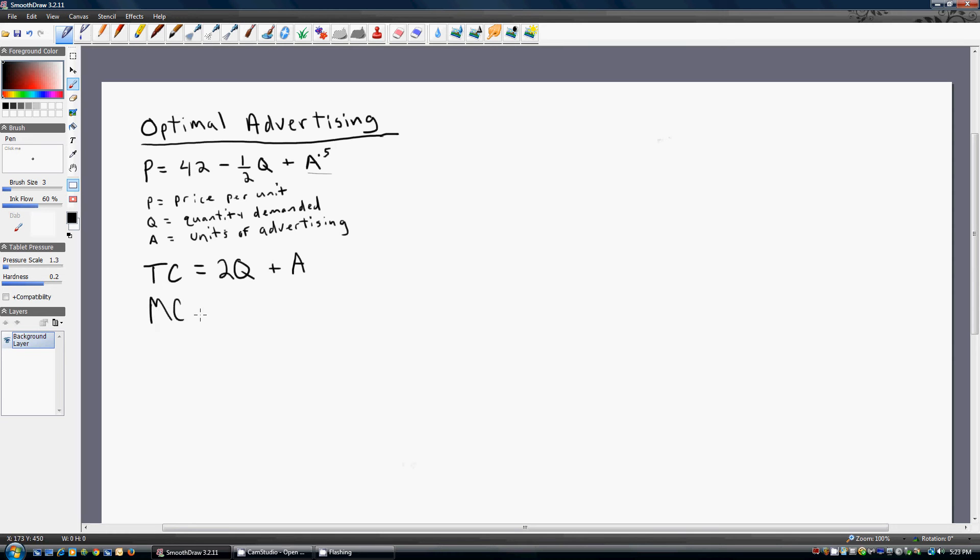The first marginal cost we want is the marginal cost of output. It's going to be the partial derivative of the total cost equation with respect to output Q, and we get 2. So this firm has a marginal cost that is constant at 2.